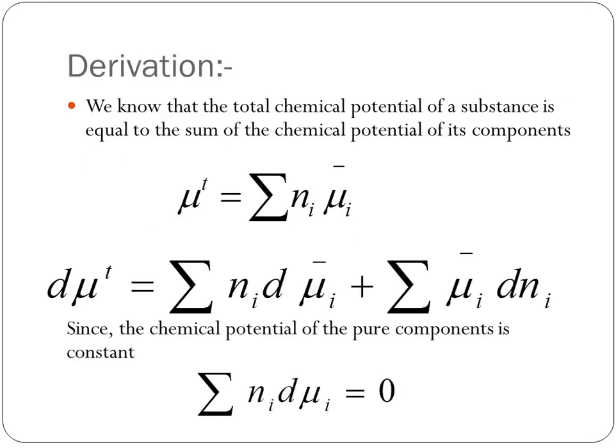Next, let's go into the derivative part. We all know that the total chemical potential of a substance is equal to the sum of chemical potentials of its components. That's why μt (total chemical potential) equals Σ(Ni μi), where Ni is the number of moles of that component present in the substance multiplied by the chemical potential of that component.